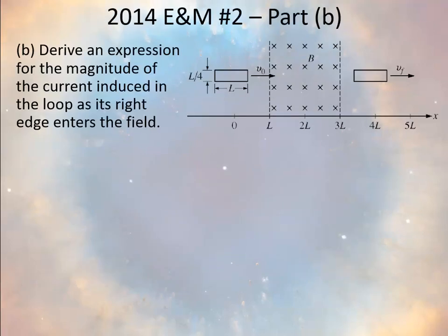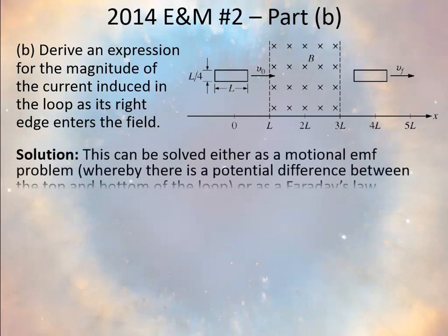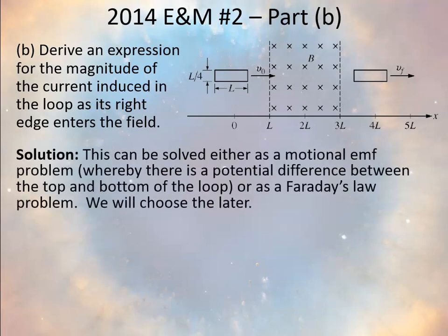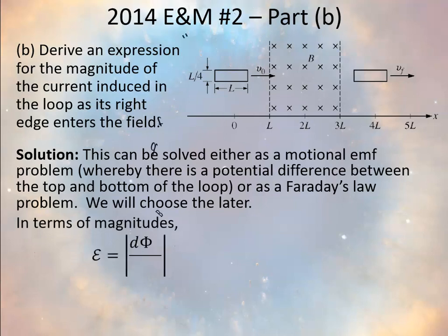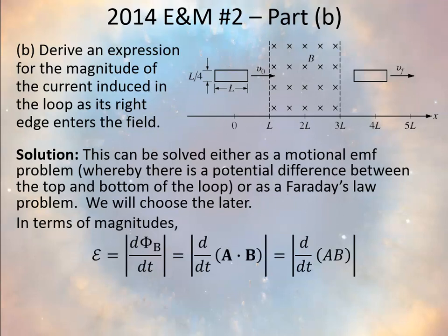In part B, we derive an expression for the magnitude of the current induced in the loop as its right edge enters the magnetic field. You can think of this as either a motional EMF problem or a Faraday's Law problem — you'll get the same result. Thinking in terms of Faraday's Law and working in terms of magnitude, the magnetic flux is A⃗ · B⃗.